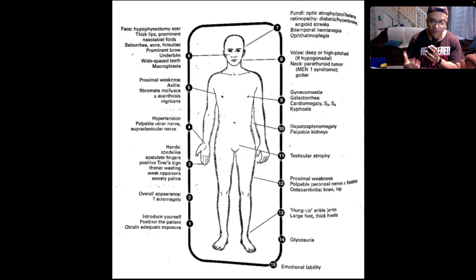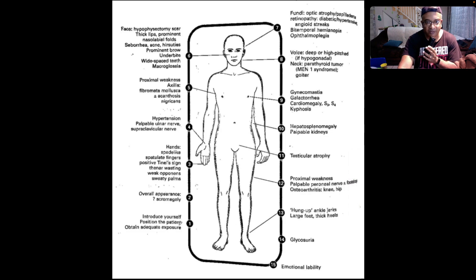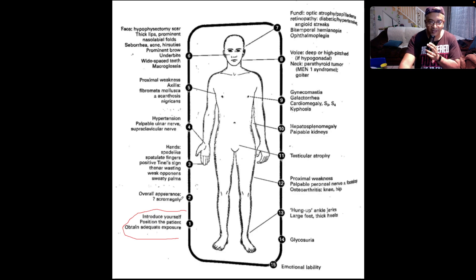How do we approach this patient? First up, you want to introduce yourself, position the patient appropriately, and obtain adequate exposure. Then you step back and look at the gestalt of the case — the overall appearance. Does the patient look like they have acromegalic facies? We'll talk about that.